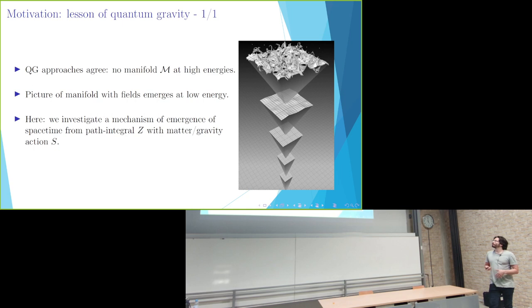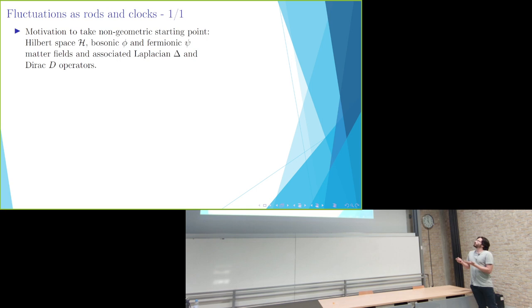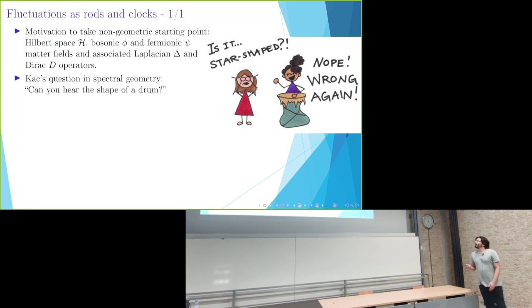We did that from a point of view of a path integral formalism where we actually start only with a matter gravity action, but not actually a manifold structure or a metric structure from the outset. We wanted to take a kind of non-geometric starting point where we just have a Hilbert space and some bosonic and fermionic degrees of freedom, and a Laplacian and a Dirac operator.